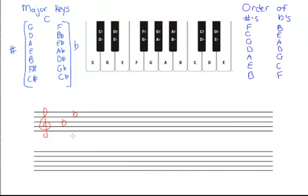Here is an example with two flats. When given a flat key signature — and if it's not F, which we know has one flat, or C, which has none — we take the second last flat in the key signature. In this case, the second last flat is B flat, and that is the name of our key: B flat major.